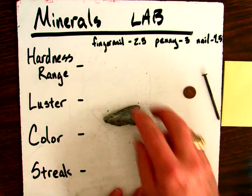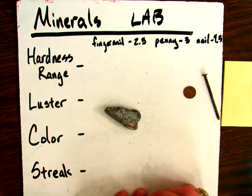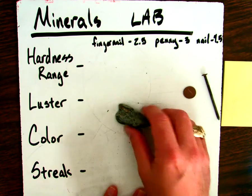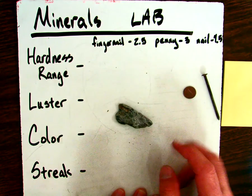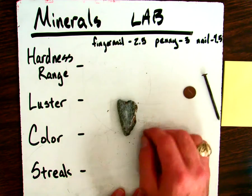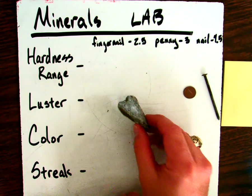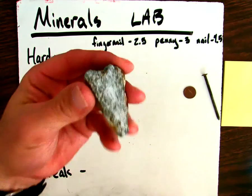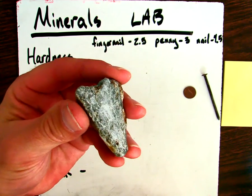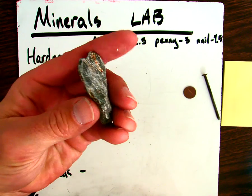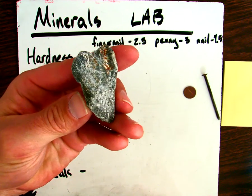Next up we're going to be looking at color. Now this board is very clean — I just cleaned it off earlier — so the board is very white. I'll hold the mineral up here. You can see different parts of this mineral.